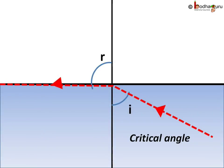The angle of incidence beyond which the ray of light passing from a denser medium to the surface of a rarer medium is no longer refracted but totally reflected is called critical angle.